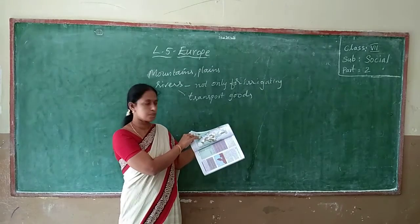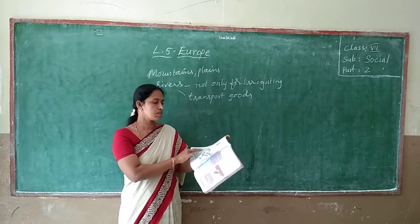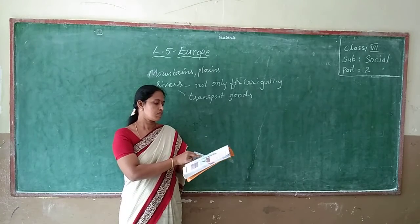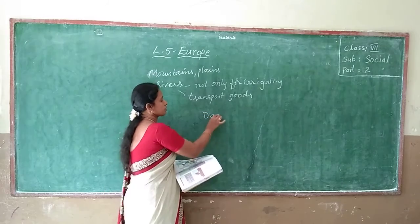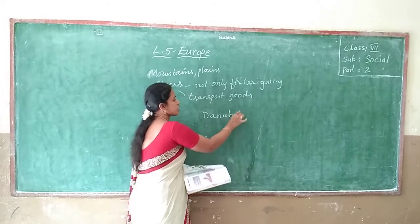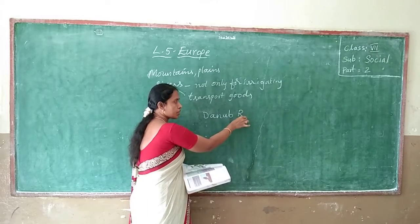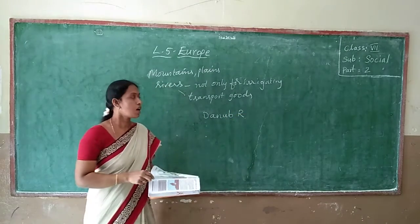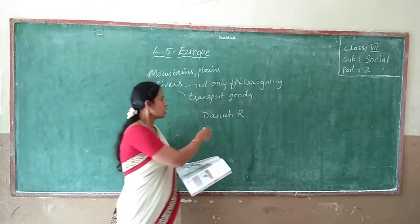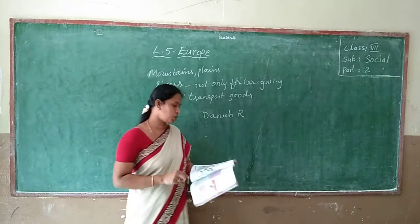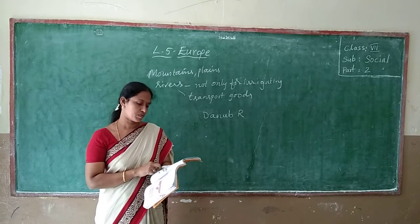See this page and find out the rivers. There is an 'R' symbol. So we say 'R'. For example, here is the Danube river, written like this — Danube, D-A-N-U-B-E. 'R' denotes river. You can observe like this. Danube, and beside that the 'R' is there — that is the river. Cristina river too. So many rivers are in Europe.